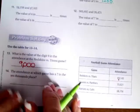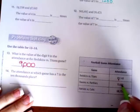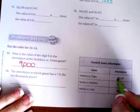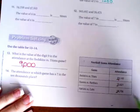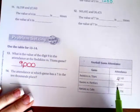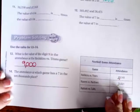The attendance at which game has a seven in the 10,000th place? Well, our six is in the 10,000th place, seven and eight. The only one here that has a seven in the 10,000th place is going to be the Ravens versus Panthers.